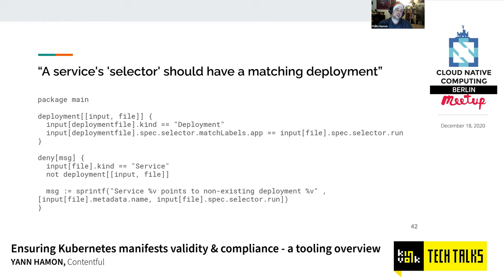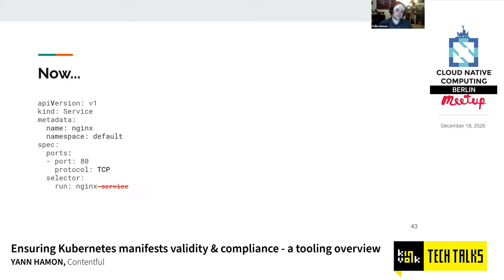Running this conftest rule with `--combine` actually fails and shows me that the selector I had for my service was incorrect — I need to use `nginx` instead of `nginx-service`. This is a good example of a test that validates two manifests simultaneously.